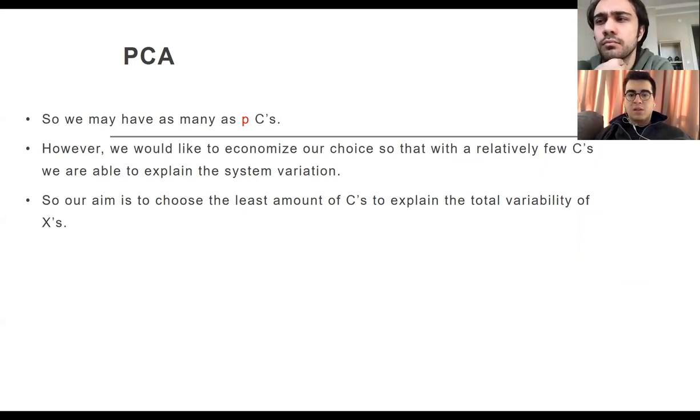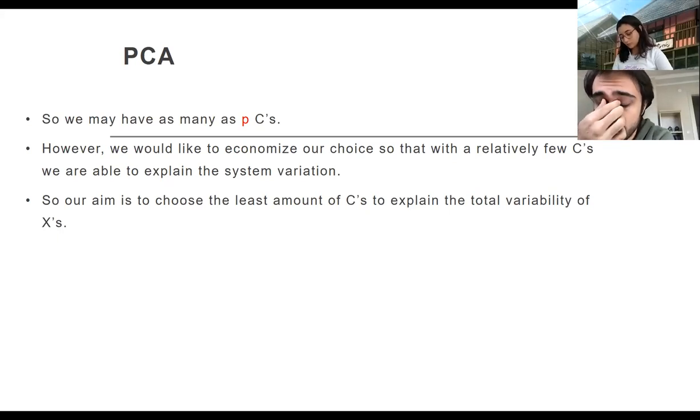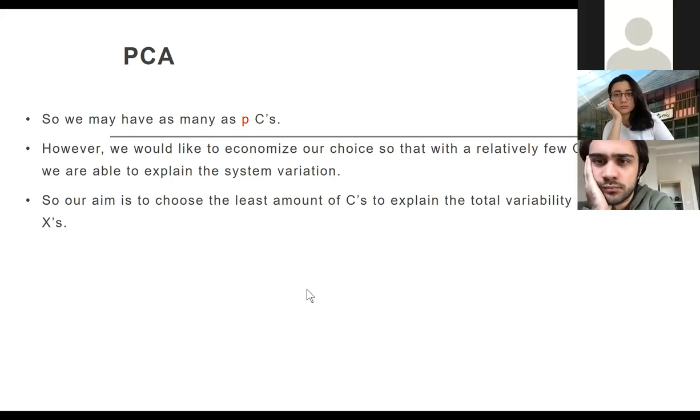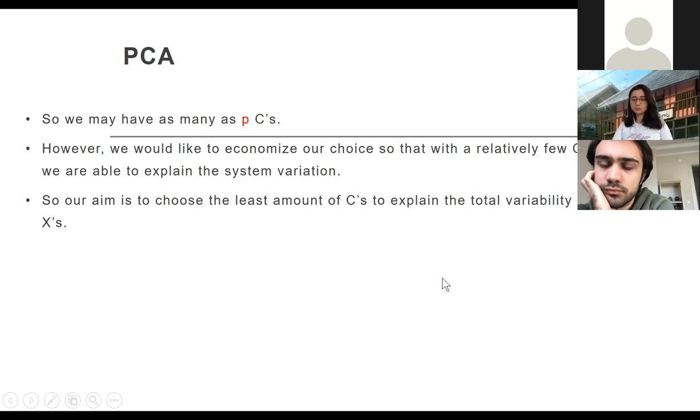We are in the world of math, no regression or anything like that. C'lerin toplam karelerinin 1 olması koşulunu koyuyoruz ki C'ler belirli bir büyüklükte kalsın, normalize olsunlar. We want to maximize the explanatory power of the C's while minimizing their number. What we are trying to find out is that total variability of X could be reduced to some vectors with normalization condition - all these linear combination coefficients sum up to one. It's just pure math.